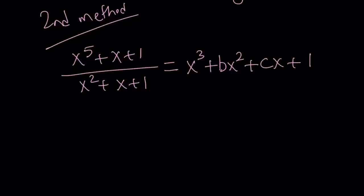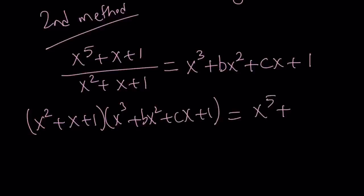And now I'm going to go ahead and cross multiply. That's going to give me x squared plus x plus one, multiply by x cubed plus bx squared plus cx plus one, and that is supposed to give me the numerator, which is x to the fifth plus x plus one.